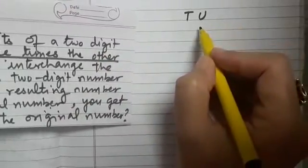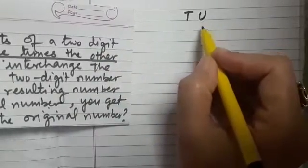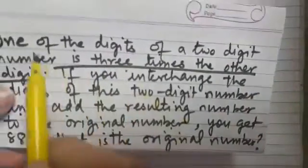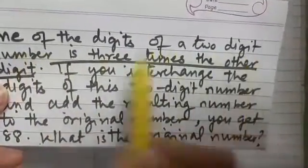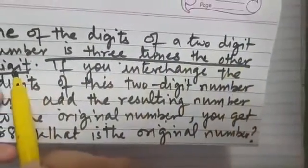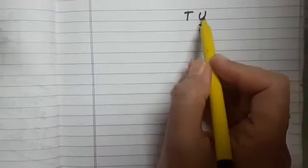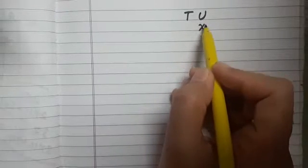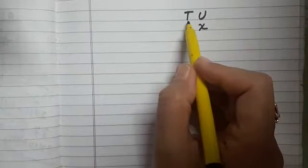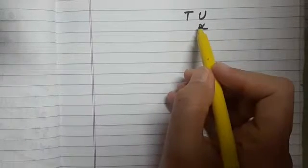We assume that digit at the units place is x. In this question it is given that one of the digits of the two-digit number is three times the other digit. So we can take either digit at unit place be x or we can take digit at tens place be x. So accordingly we can do the question.